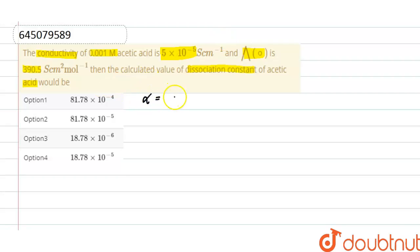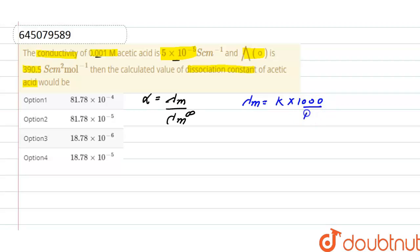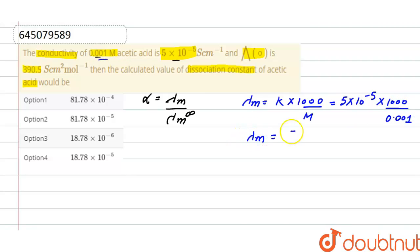To find molar conductivity, we use the formula: molar conductivity equals conductivity multiplied by 1000, divided by molar concentration. Conductivity is given as 5×10⁻⁵, multiplied by 1000, divided by concentration 0.001. Solving this, lambda m equals 50.